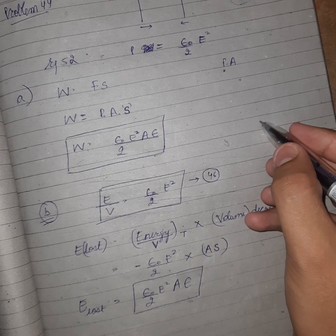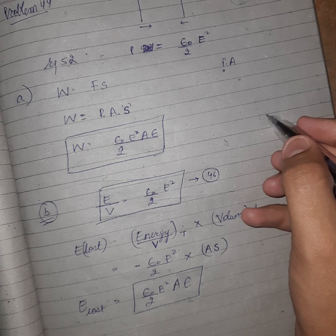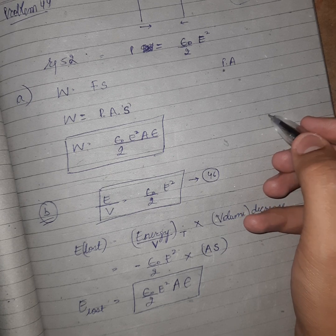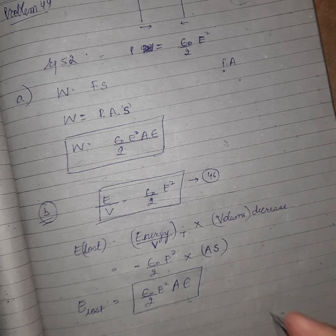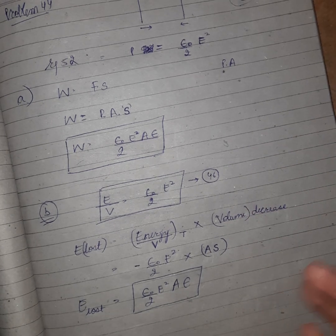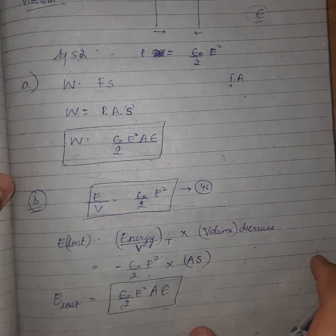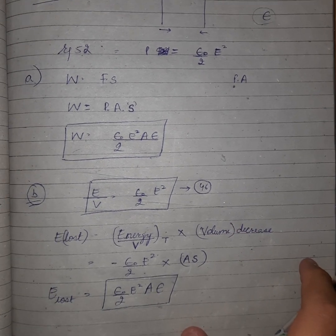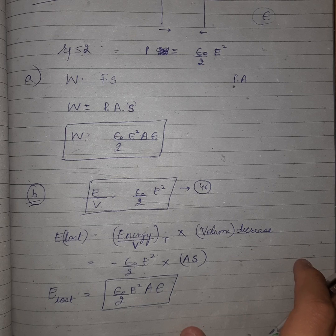So from this problem, the main point is that work done equals energy lost when the parallel plate capacitor plates move closer by a small distance due to their mutual attraction. That's all for this video — see you in the next one.